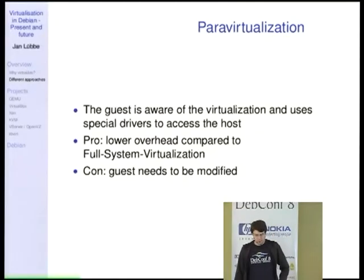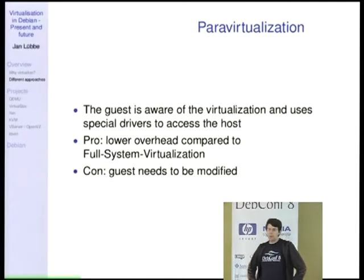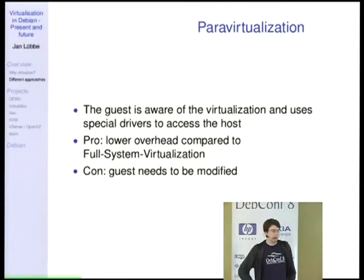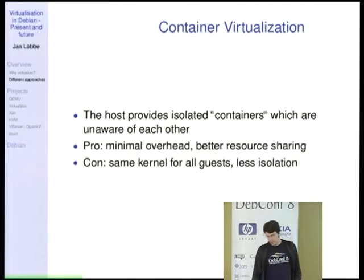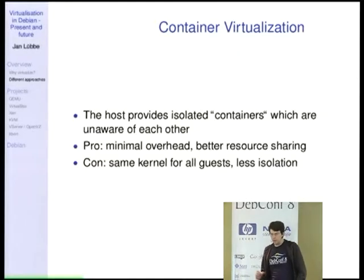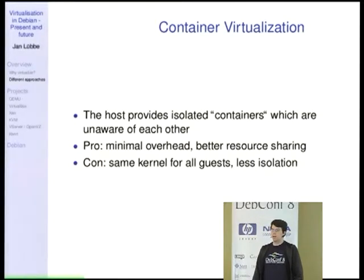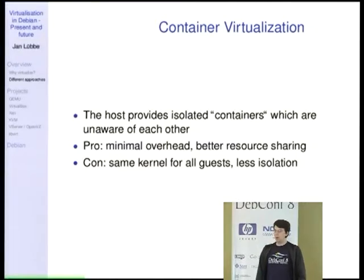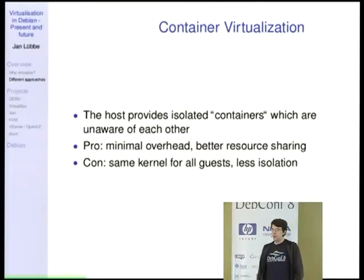Then we have para-virtualization, which Xen is doing. That is the first time we tell the guest that it is running on virtual hardware so it can cooperate. We have lower overhead because we don't need to emulate things like disk controllers and network devices, but the guest needs to be modified so we can't run any operating system. Then we have container virtualization, which may not be virtualization at all because we run just one kernel but applications see different environments. We have minimal overhead and better resource sharing because we can share the page cache. But we can only run one kernel, so all guests have to use the same kernel, and the isolation is not as strict as with para-virtualization or full virtualization.